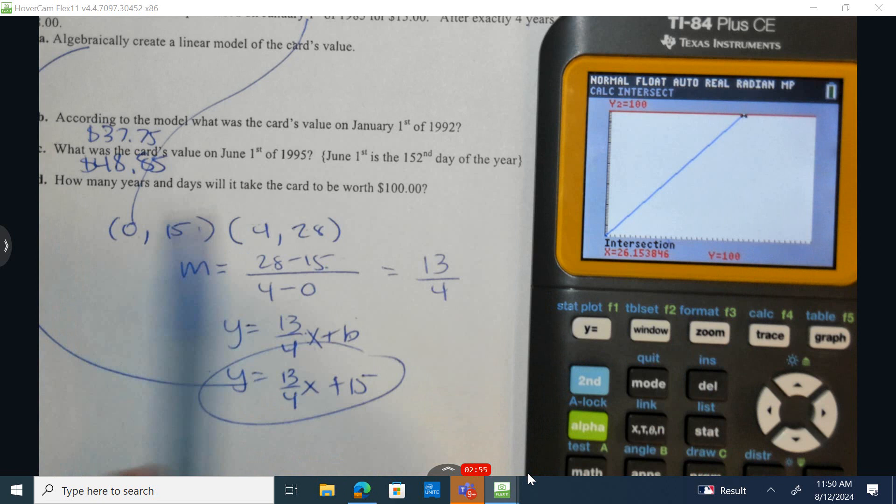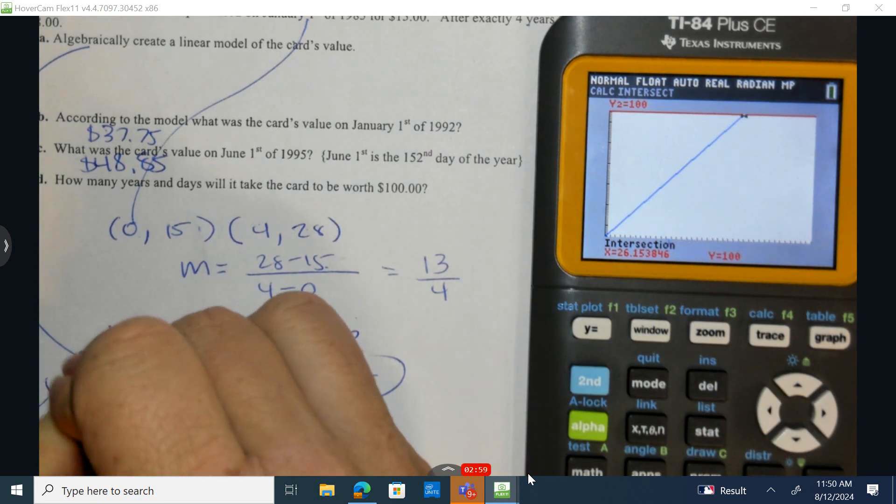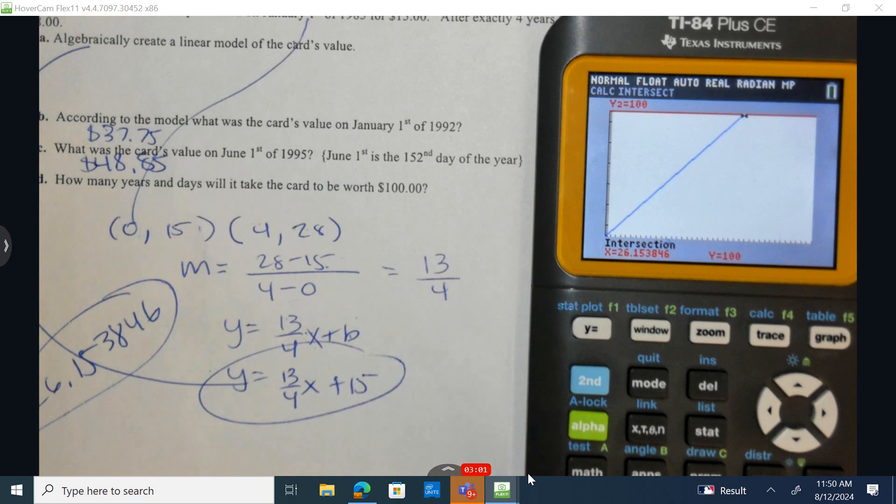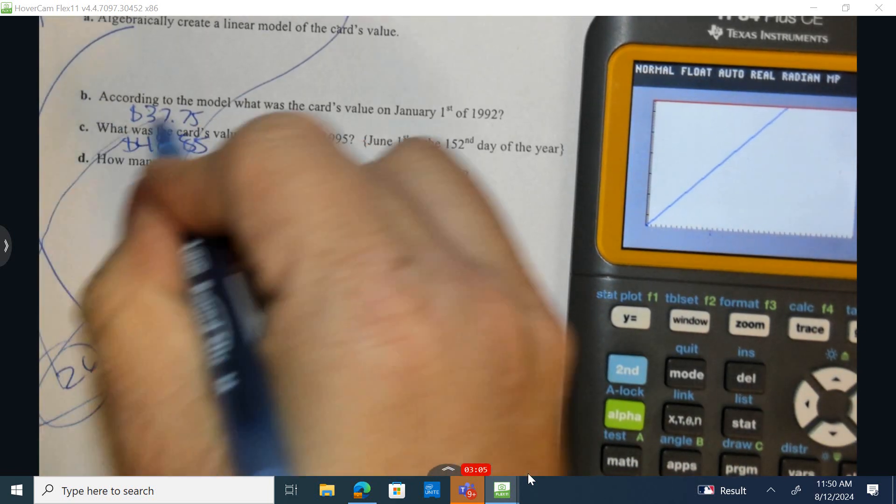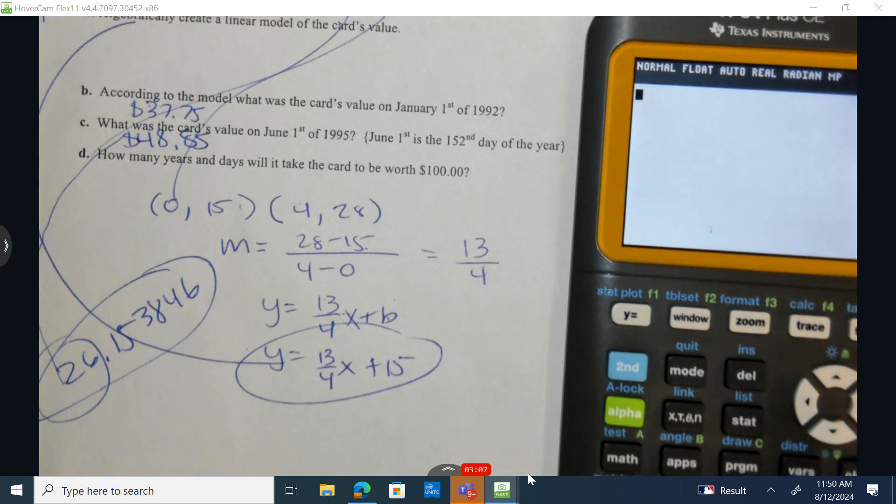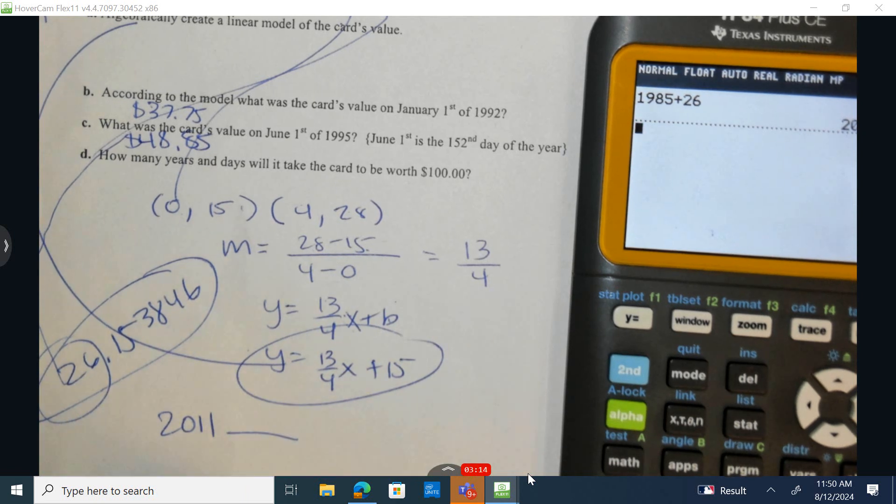So I had to adjust the window so I could see it. So when is the card worth $100? 26.153846. What does this mean? 26 years past the initial year. So if I take 1985 and I add it to 26, we can assume in the year 2011, and now we want to know the number of days.